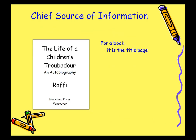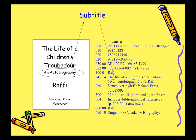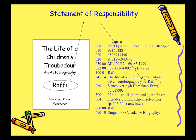For a book, the chief source of information is the title page. The main part of the title, or the title proper, is recorded exactly how it appears on the title page in the 245 subfield A. The subtitle, if there is one, is recorded in the 245 subfield B, preceded by a colon and a space. The statement of responsibility — in this case the author — is transcribed exactly from the title page into the 245 subfield C, preceded by a forward slash and a space.